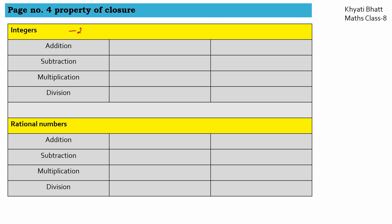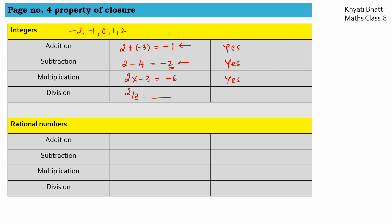Now let us check for integers: minus 2, minus 1, 0, 1, and 2 — all negative numbers, positive numbers, and 0. For addition: 2 plus (minus 3) equals minus 1, which is an integer, so yes, integers are closed under addition. For subtraction: 2 minus 4 equals minus 2, which is also an integer, so yes. For multiplication: 2 times (minus 3) equals minus 6, which is an integer, so yes. For division: 2 by 3 gives a decimal or fraction, so no, integers are not closed under division.